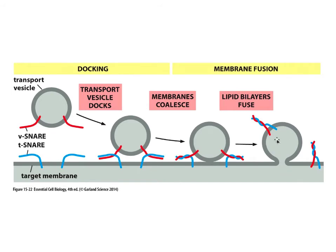Once fused, the vesicle membrane becomes a contiguous part of the target membrane. The contents — the lumen of the vesicle — are then released out into the destination space. That is what happens at the destination.